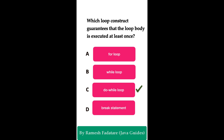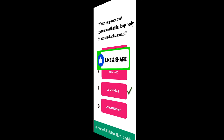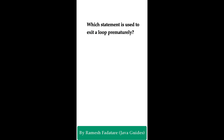The do-while loop guarantees that the loop body is executed at least once because it checks the condition after executing the loop body, ensuring the body runs at least once regardless of the condition's initial truth value. Which statement is used to exit a loop prematurely?